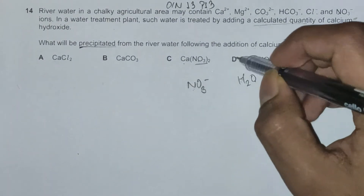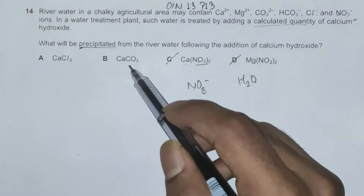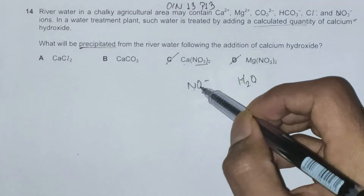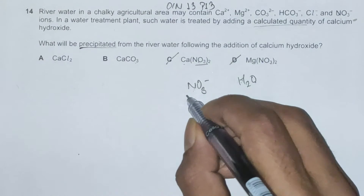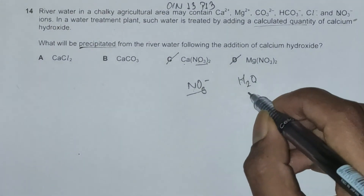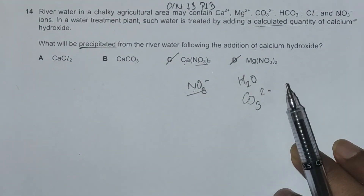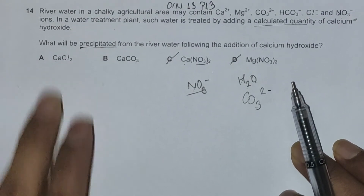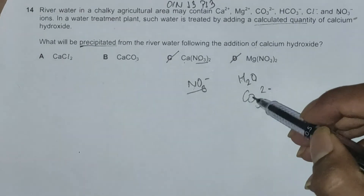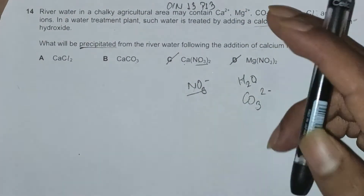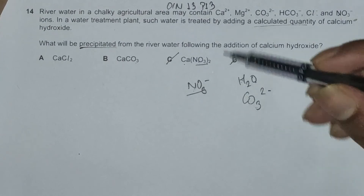We can safely reject options C and D. Now, why are carbonates different from nitrates if both have three oxygen atoms? The key difference is the charge: nitrate is NO₃⁻ with a single negative charge, but carbonate is CO₃²⁻ with a double negative charge. Because carbonates have a greater negative charge, they are more strongly attracted to cations, making CaCO₃ more stable and insoluble in water.